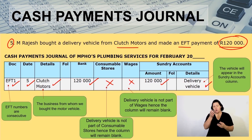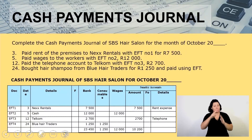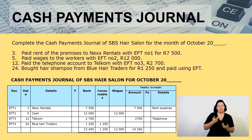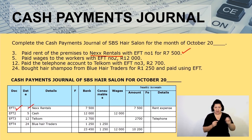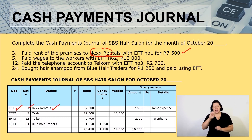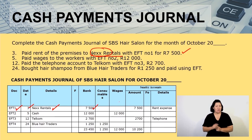It is very important that you don't record amounts in the wrong columns. Let's do another activity. Paid rent of the premises to Next Rentals with EFT number one, 7,500. The date is the third, we paid Next Rentals, 7,500. It's not consumables, no wages, so it comes to the sundry accounts as rent expense.